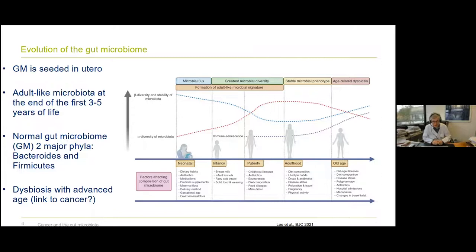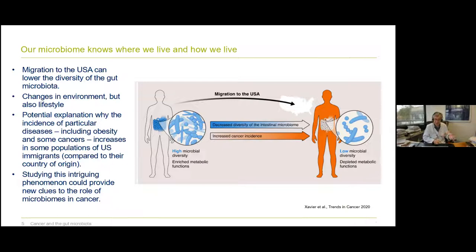Our microbiome knows where we live and how we live. For example, when you migrate from a country like South America to the US, this can lead to lower diversity of the gut microbiota, reflecting changes in environment and lifestyle. This might explain why the incidence of particular diseases, including obesity, increases in populations of US immigrants compared to their country of origin. Studying this phenomenon could provide new clues on the role of the microbiome in promoting cancer.